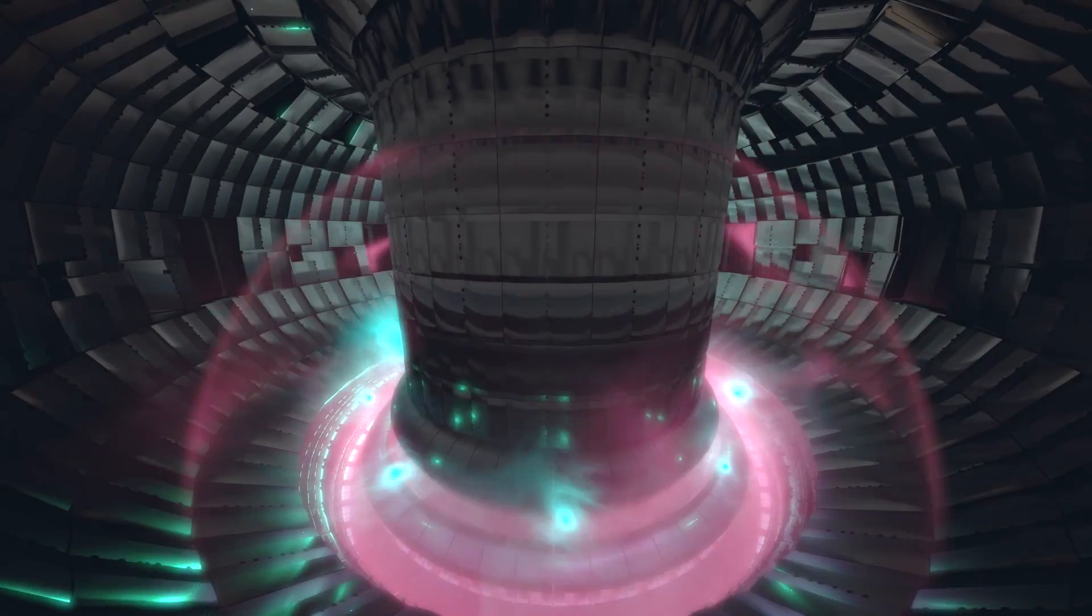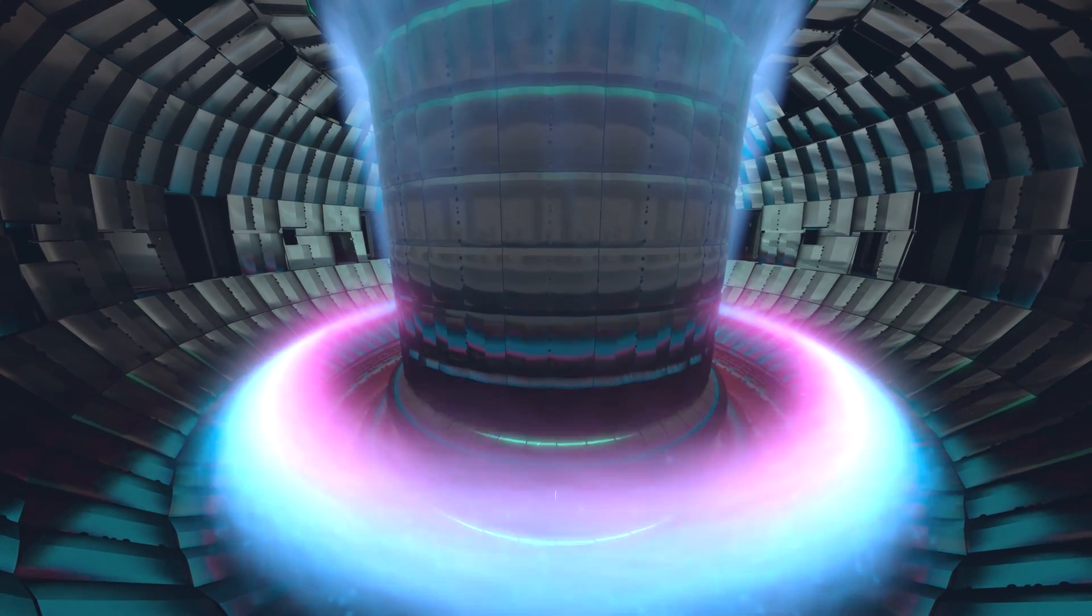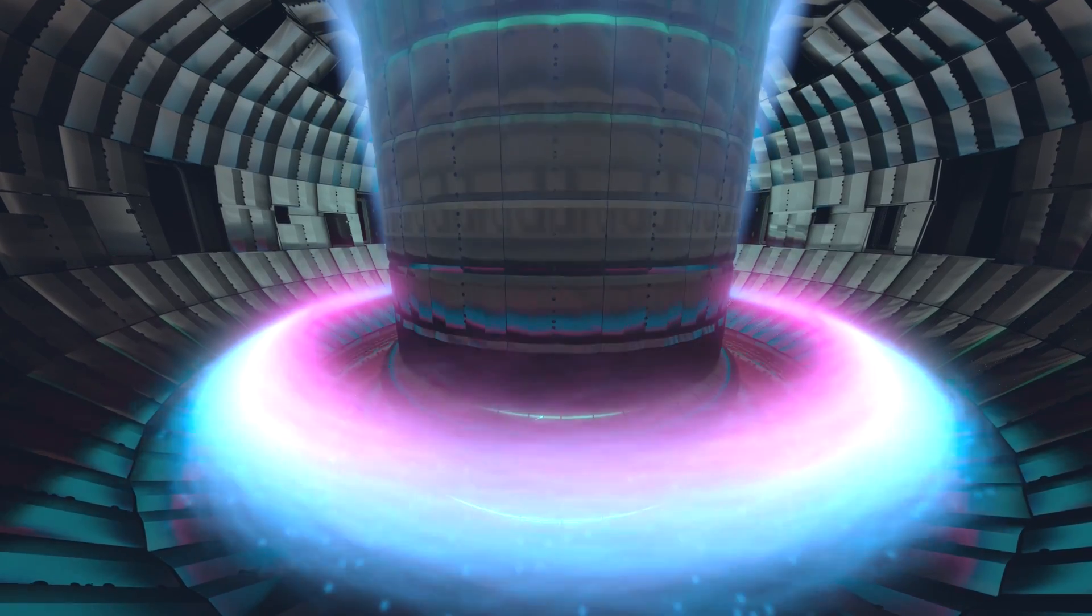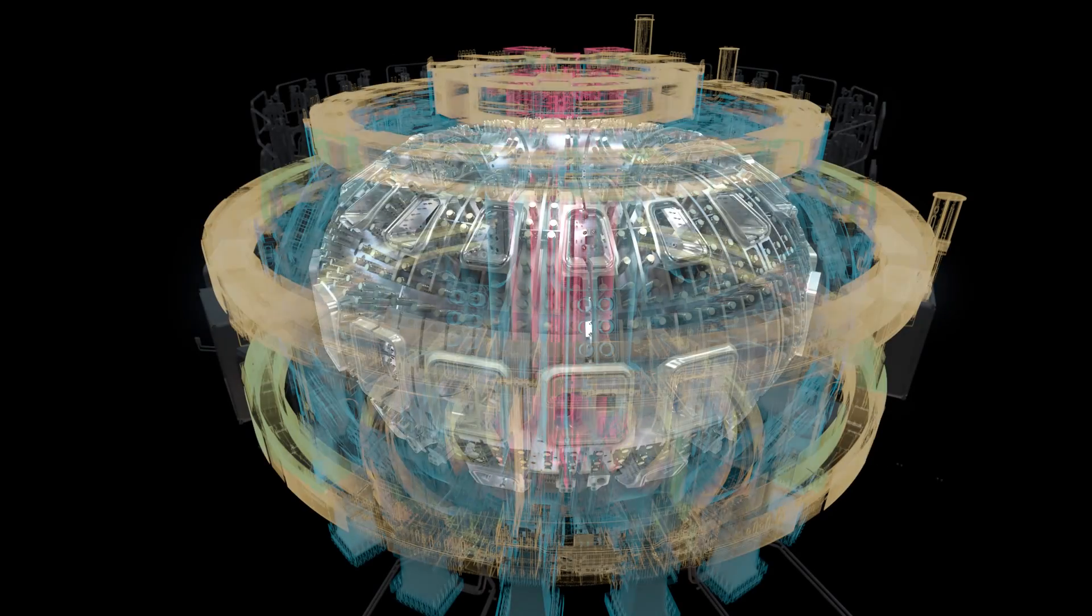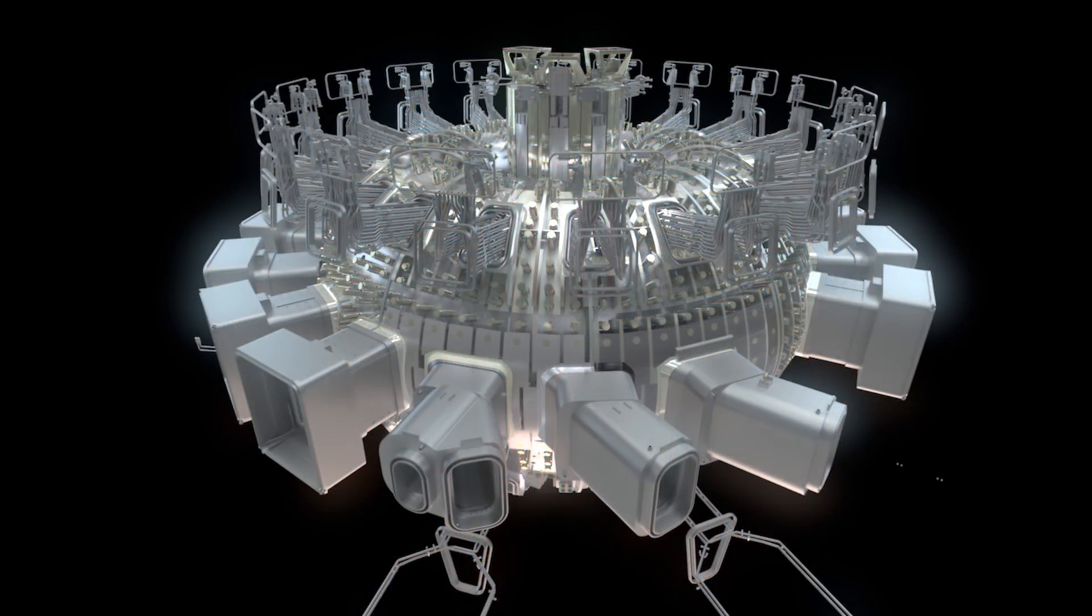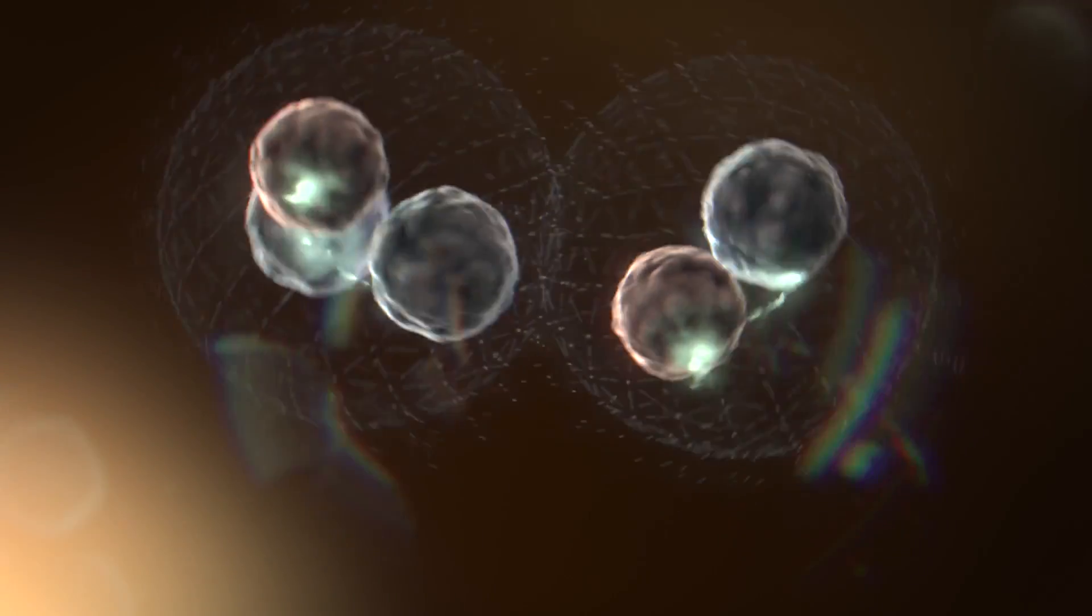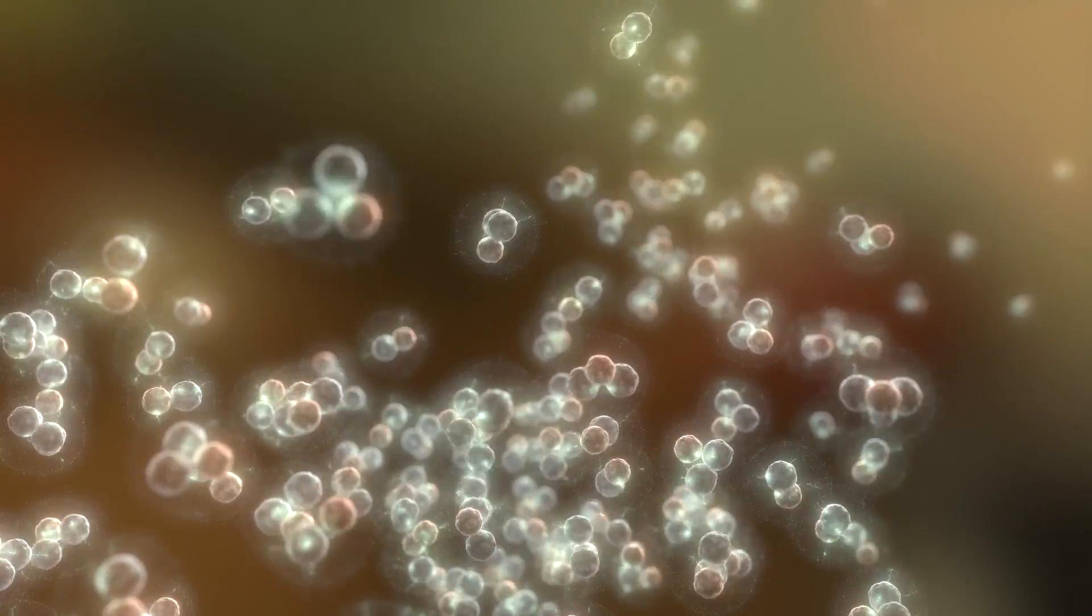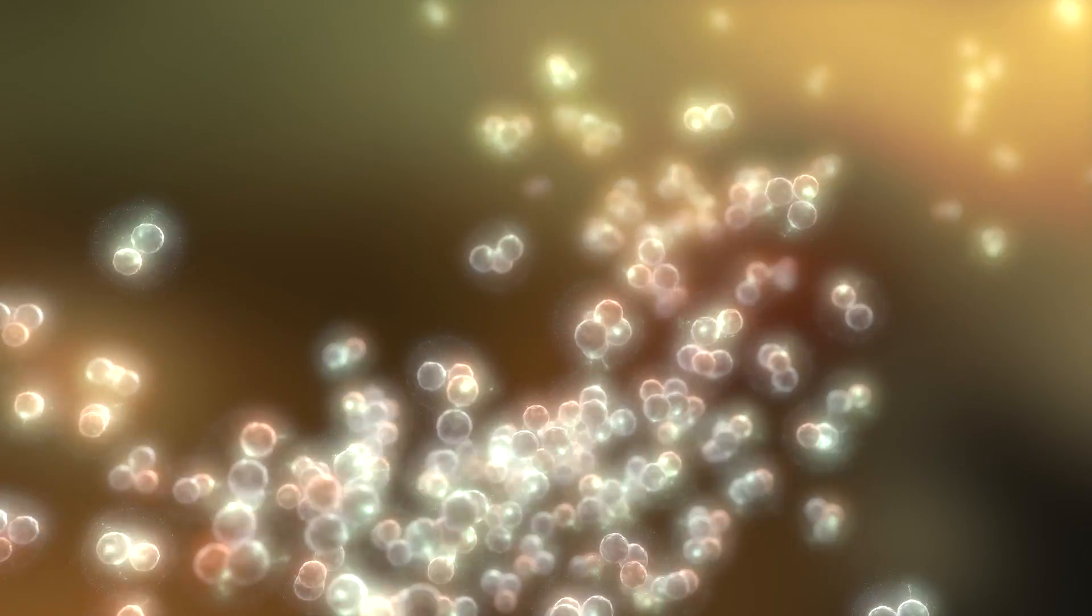Beyond its symbolic importance, ITER's first plasma will be an important trial run for the machine, a first occasion to verify the correct alignment of the machine's magnetic fields and the correct functioning of key systems. The very first low-power hydrogen plasma, lasting only a few milliseconds, will be followed by other shots of increasing power and duration.